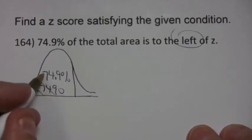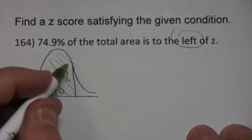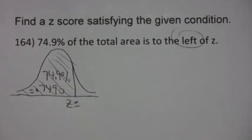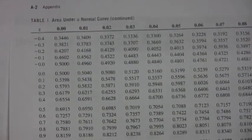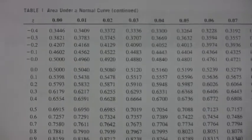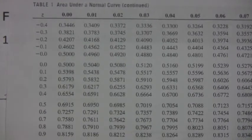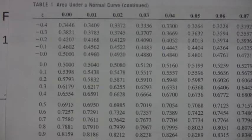So I want 74.9% of the area which is 0.7490. I want that value of z, the z that produces that much area. Well the table gives you to the left so I don't have to do anything with it this time. I just simply need to go to the table and find the value of z that corresponds as close as possible to 0.7490.